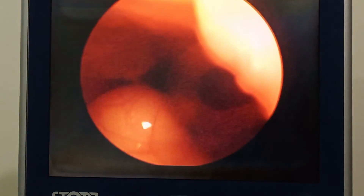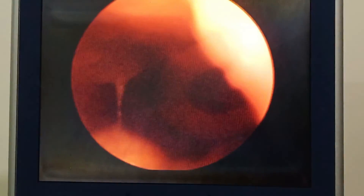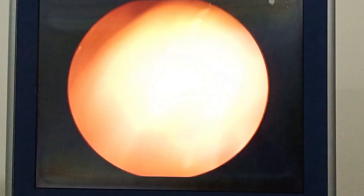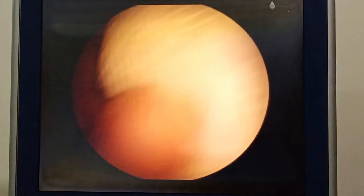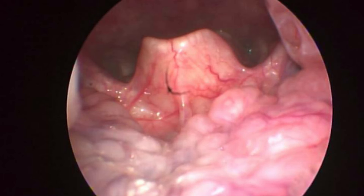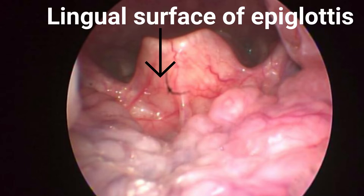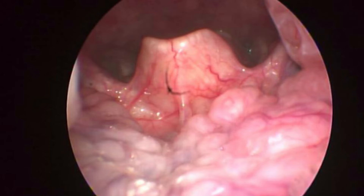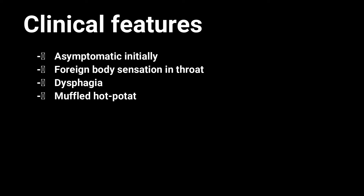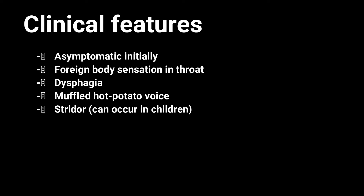Vallecular cysts are thin-walled and usually arise from the lingual surface of the epiglottis. They may be asymptomatic, or may give rise to foreign body sensation in the throat, dysphagia, muffled or hot potato voice.